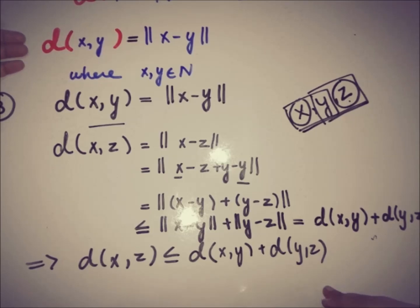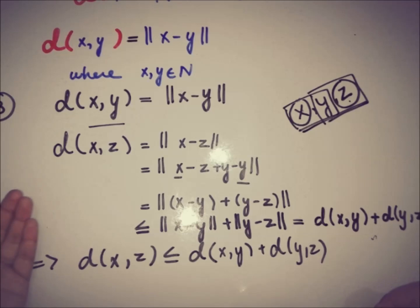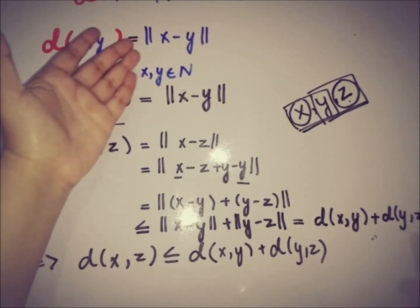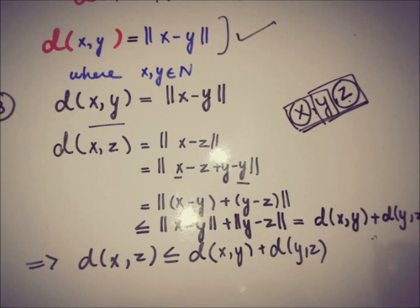All three properties of being a metric are satisfied by this function, so it is indeed a metric on a normed space. We have proved that every normed space is a metric space. However, the converse is not true — every metric space is not a normed space. This is all for now; subscribe to this channel for more upcoming videos. We will meet in the next video, till then take care, goodbye.